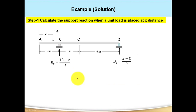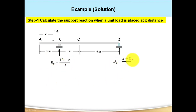The first step is to calculate the support reactions, because we need them to calculate shear and moment. To do this, we place a unit load at distance x from point A. The reactions are: B_y equals (12 minus x) over 9, and D_y equals (x minus 3) over 9. If you want to see how these are derived, I will put a video link in the description box. Now let us go to step two.